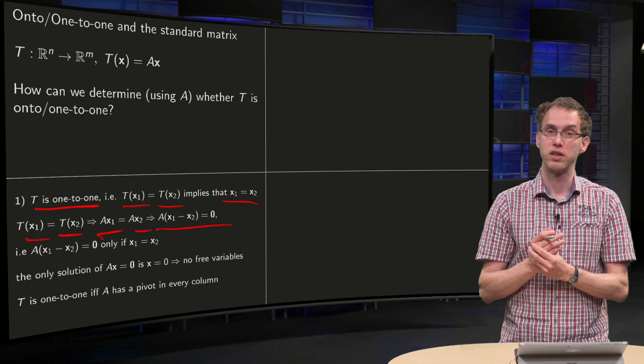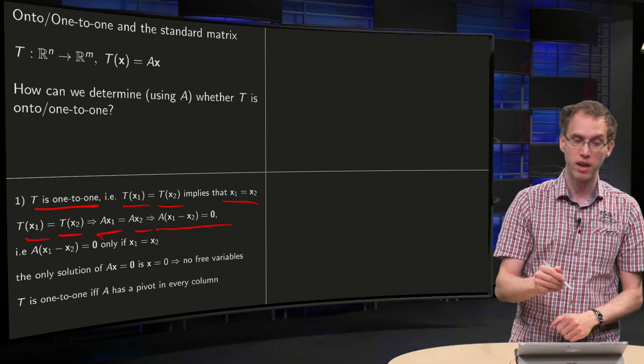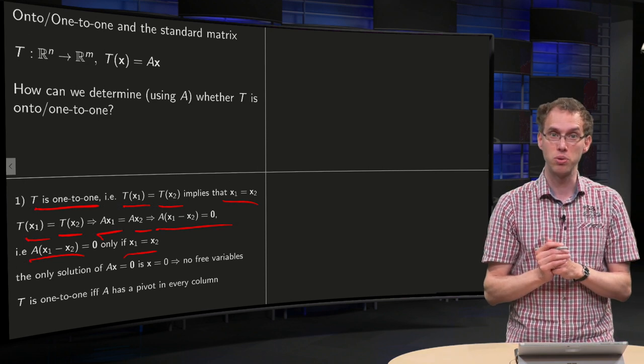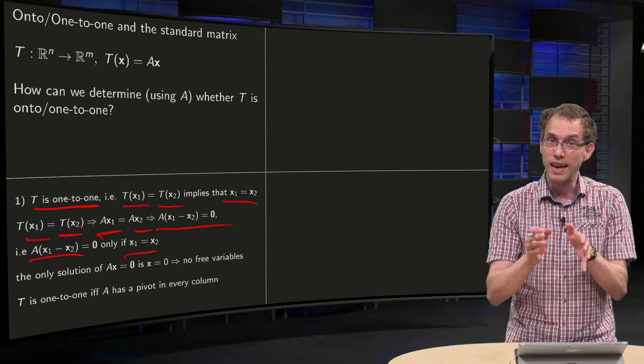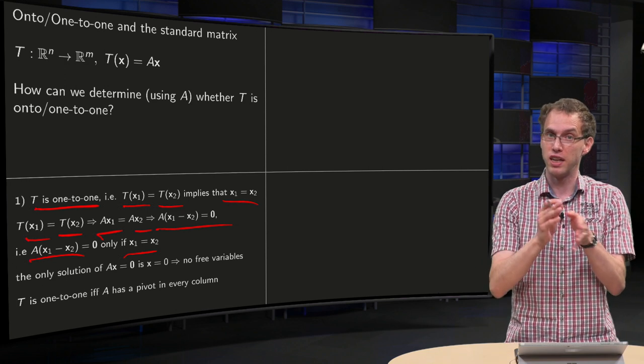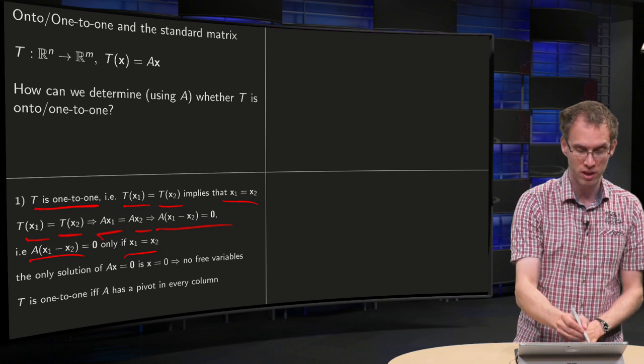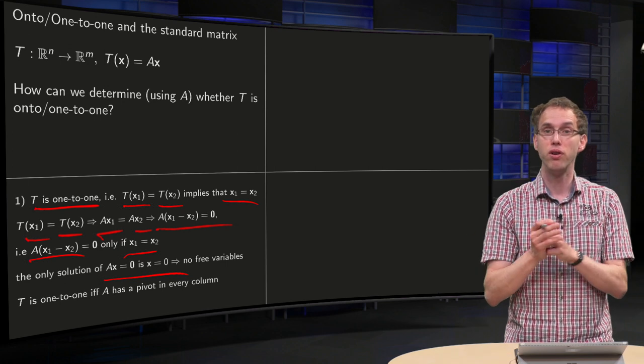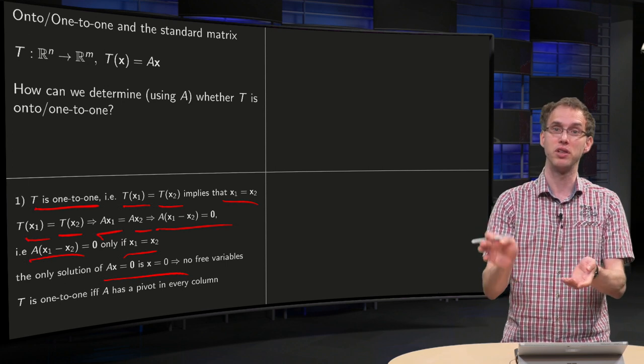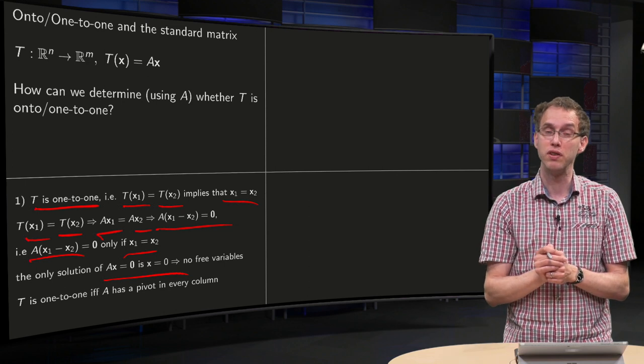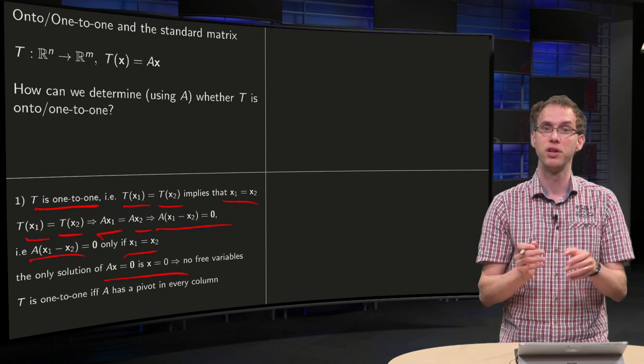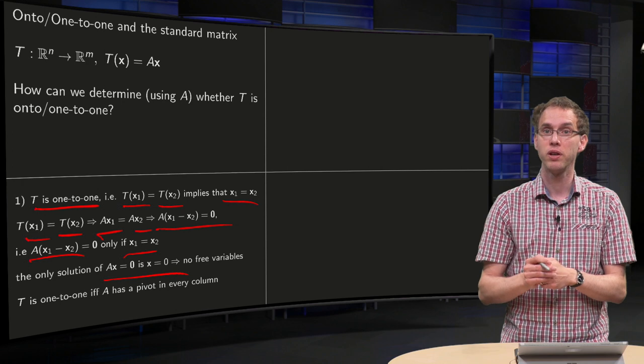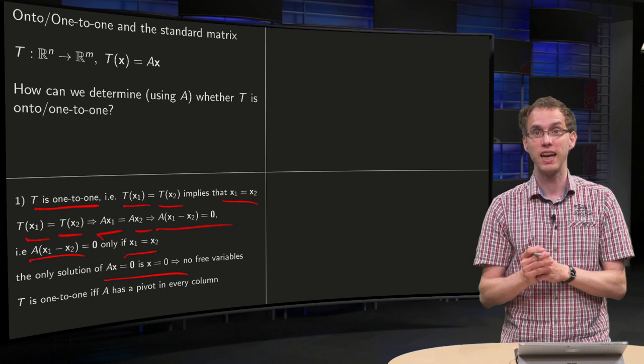And we know our transformation is one-to-one only if A times (X1 minus X2) equals zero when X1 equals X2. So that means that the equation AX equals zero only has the solution X equals zero. And this is only the case if and only if you have no free variables. Because if you would have free variables you get immediately infinitely many solutions. And if you have no free variables, X equals zero only has a solution X equals zero. So your transformation is one-to-one if and only if your matrix A has no free variables.